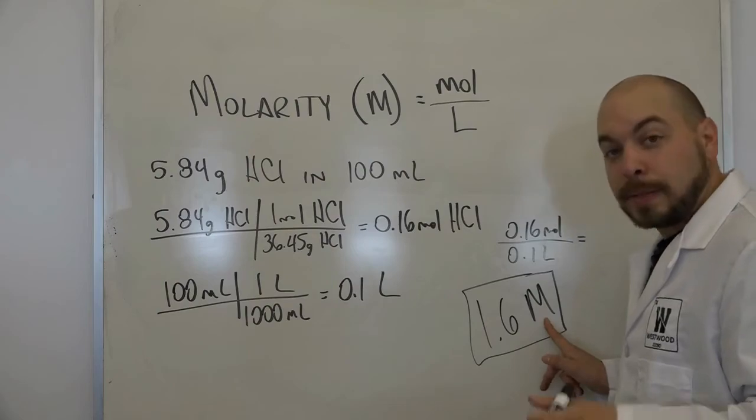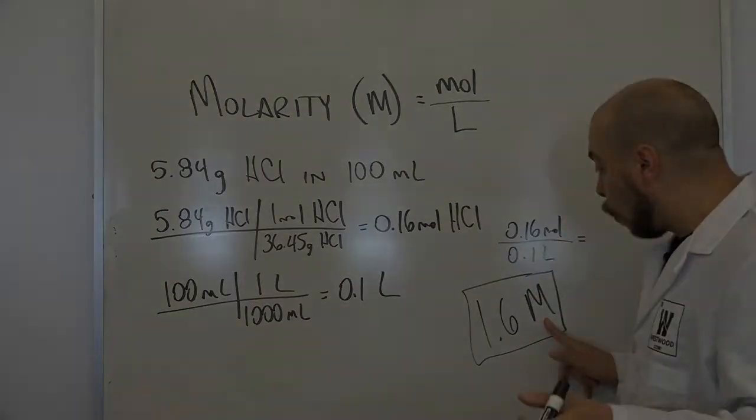Now, you can list this as capital M for molarity, or if you just want to list it as 1.6 moles per liter, that's fine too. Either reporting method works just as well as each other.